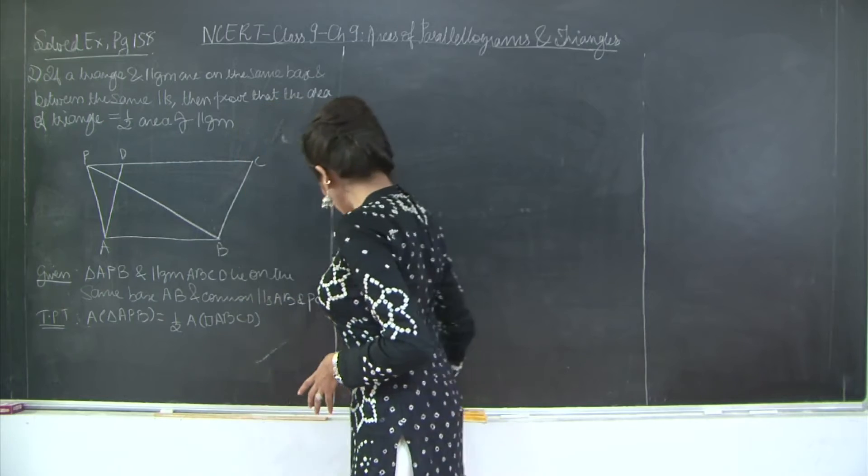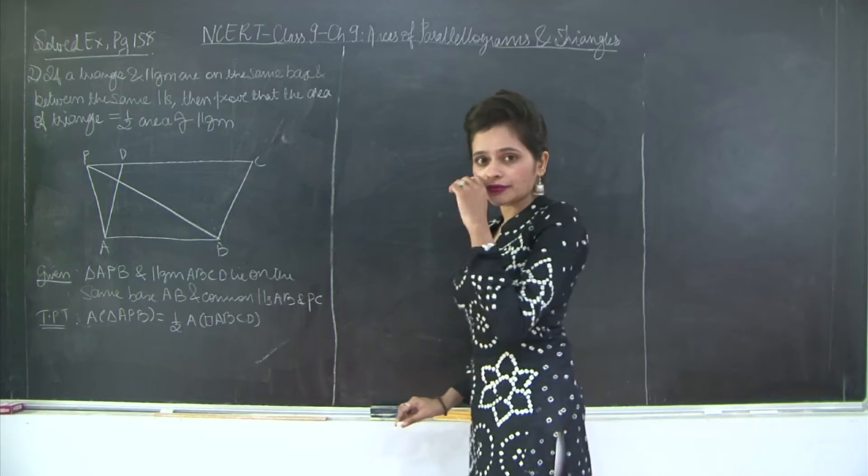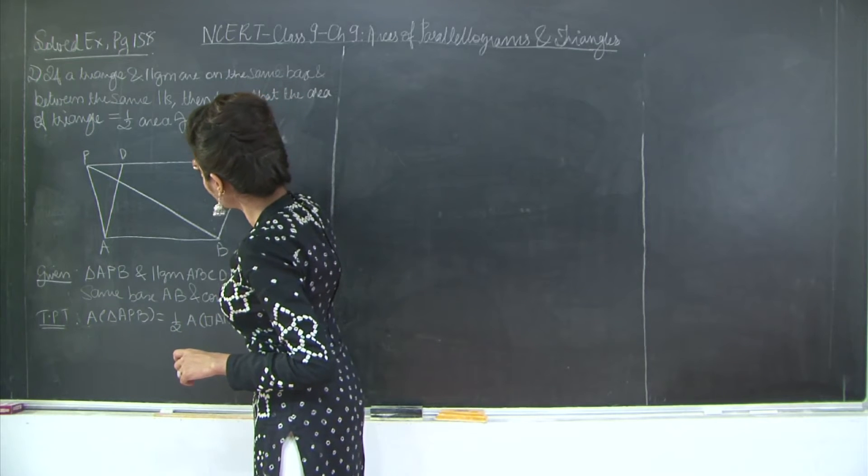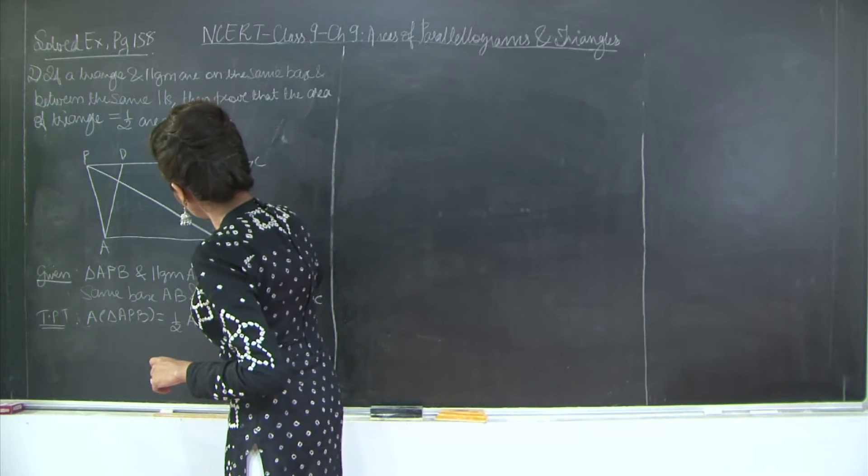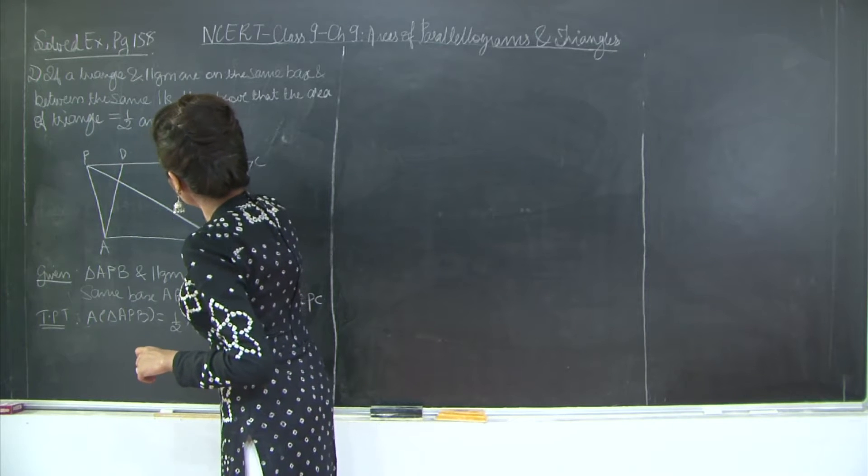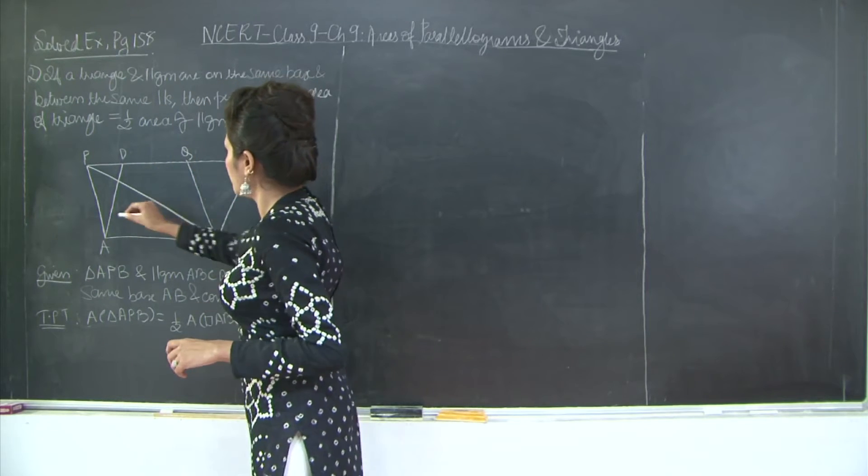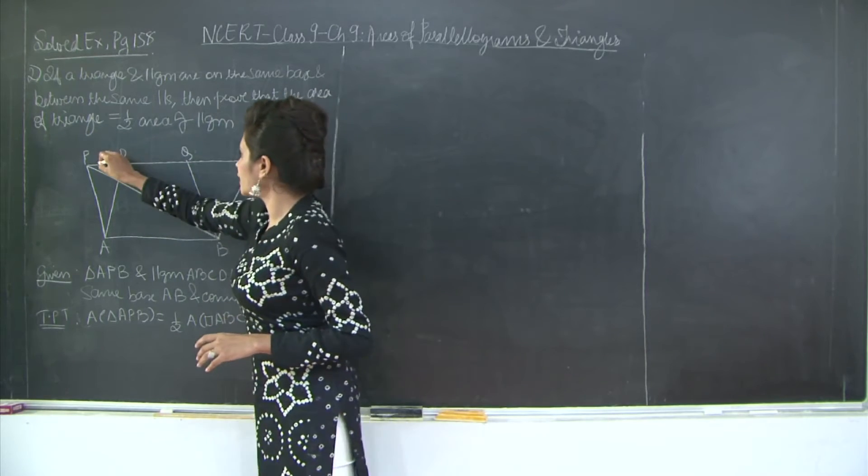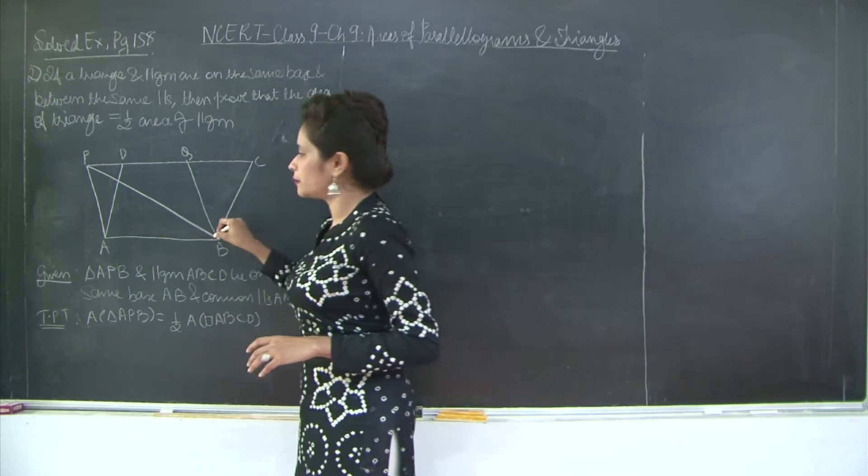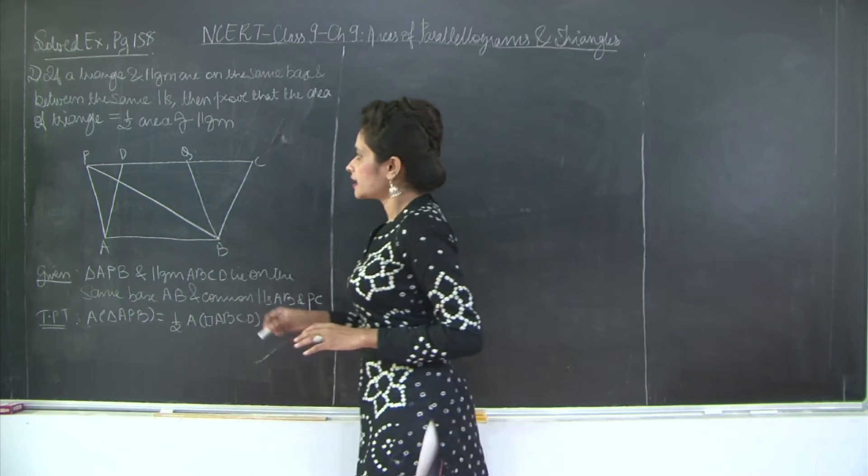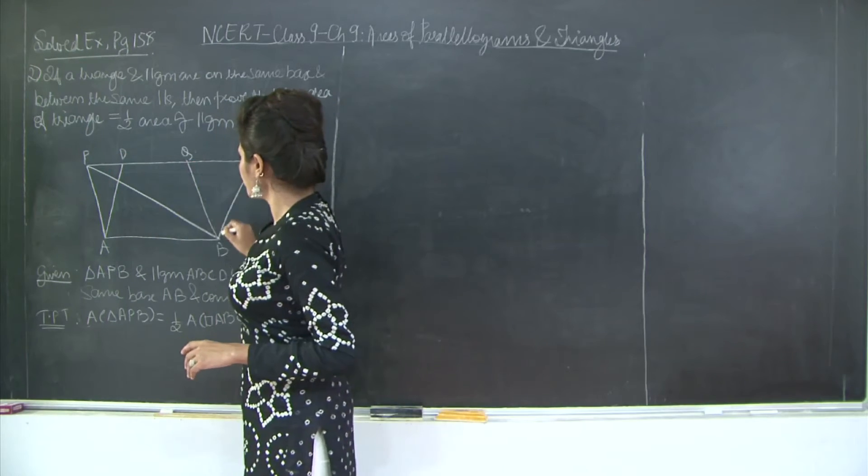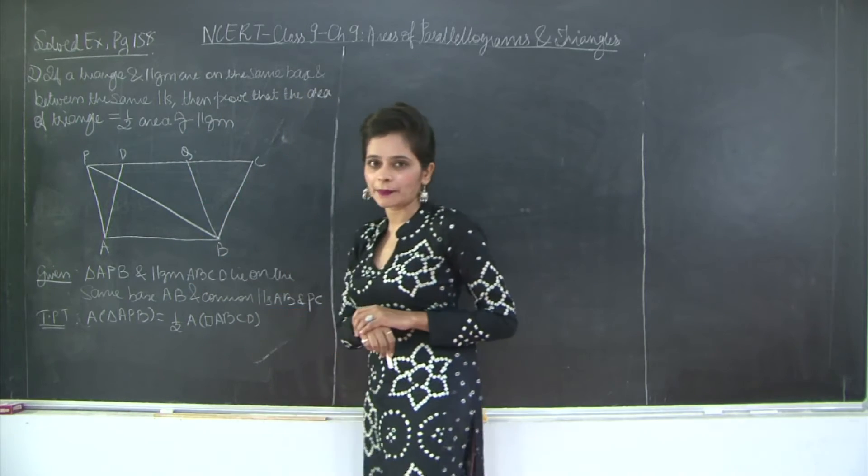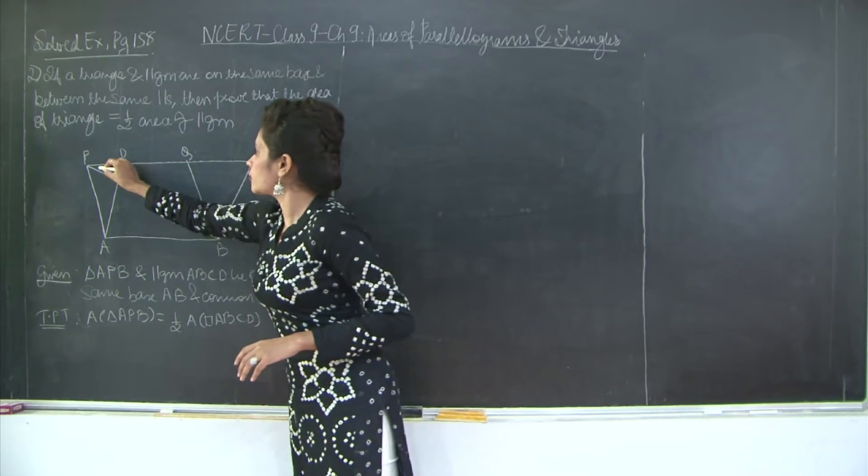So how do we do this? First, I will draw a construction BQ such that PA is parallel to QB, and also we have that PQ is parallel to AB. Therefore, APQB is a parallelogram because the opposite sides are parallel.